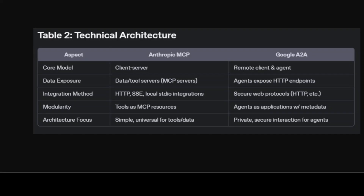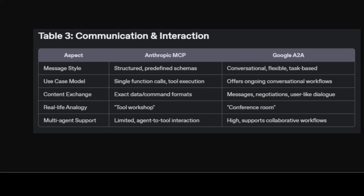A2A, on the other hand, models each agent as a privately operated service exposing an HTTP endpoint, with all communication happening over a secure, web-friendly protocol. This remote application-level approach is particularly suited to enterprises where agents may need to negotiate or interact without revealing their internal workings.